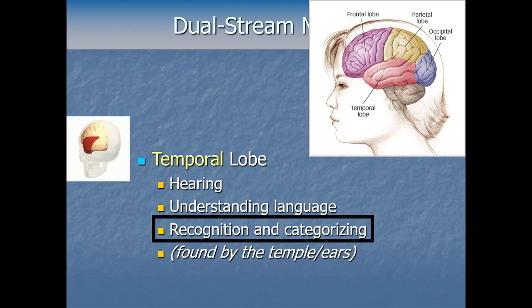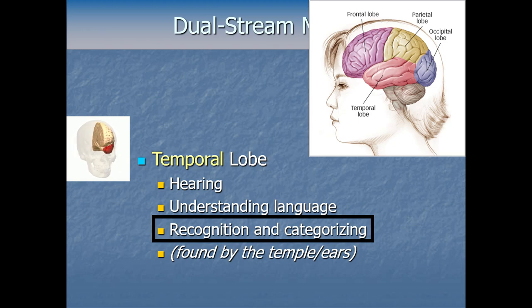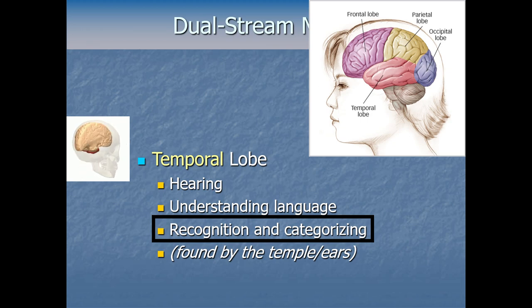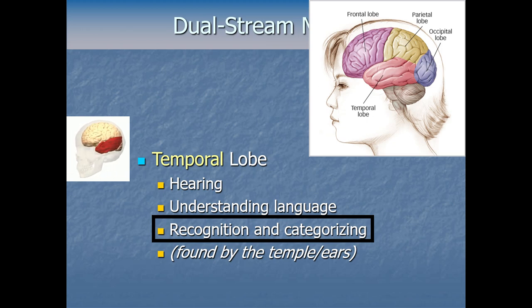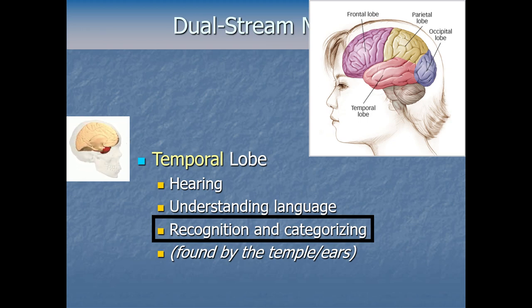The temporal lobe, in addition to being the first stop for our sense of sound and helping us make sense of language, is also essential for recognizing and categorizing things. That doesn't just mean recognizing things from hearing — like recognizing your mom's voice or a wolf's howl — it also means distinguishing a cat from a dog by how it looks, or knowing a basketball has a round shape, or that a face has a mouth below a nose. So even though the temporal lobe is the first stop for sound, it has to get input from the occipital lobe to recognize and categorize things our visual cortex started processing.